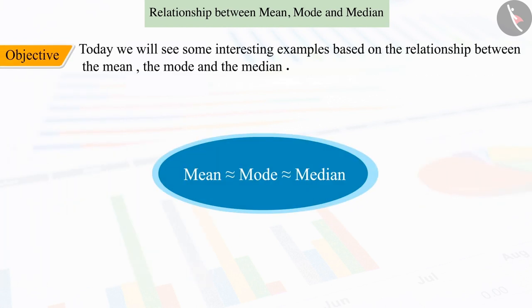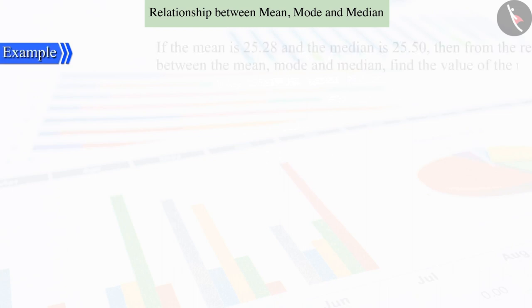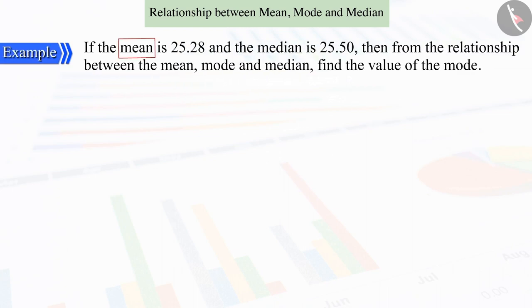Today, in this video, we will see some interesting examples based on it. In the previous video, we saw that the value of the mean is 25.28 and the value of the median is 25.50.